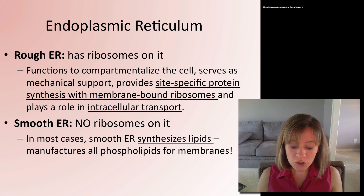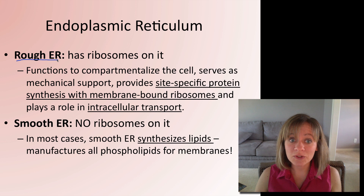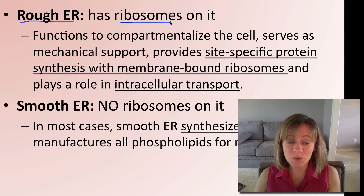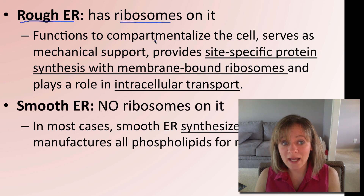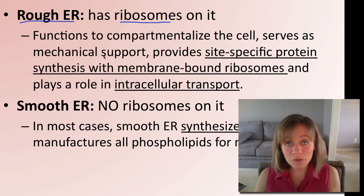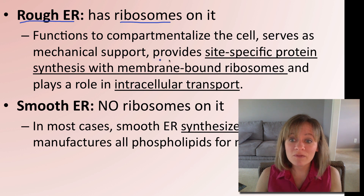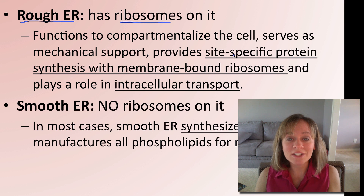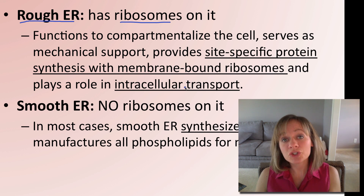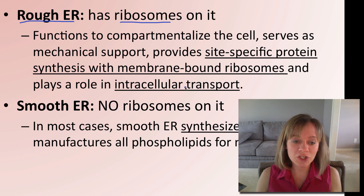The next organelle is the endoplasmic reticulum, which comes in two types: rough and smooth. The rough ER is directly connected to the nucleus and is called rough because it has ribosomes studded on it. It functions in compartmentalization of the cell, serves as mechanical support for the overall cell structure, provides site-specific protein synthesis with those ribosomes making proteins specific for the ER, and plays a role in intracellular transport — getting vacuoles and vesicles to where they need to go.